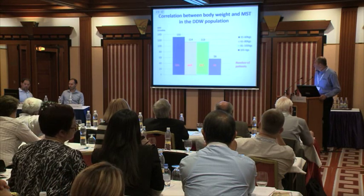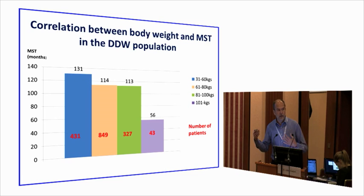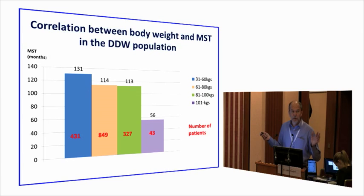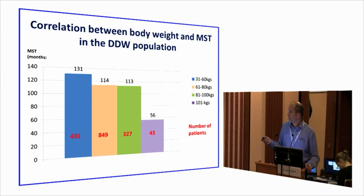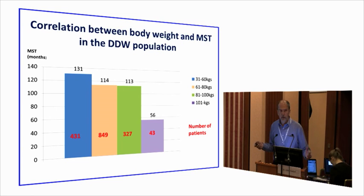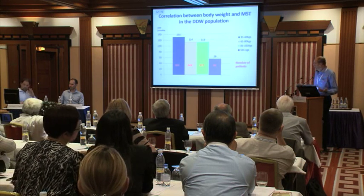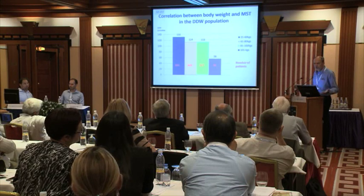Body weight can influence the DD unit. When we made four groups based on body weight, patients between 31 and 60 kg had a median survival time of only 31 months, while those over 100 kg had 56 months. This is obvious — in our clinical trials, body weight above 100 kg is an exclusion criterion because it would ruin our results.